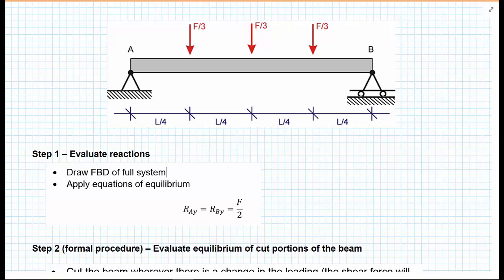In this second example on drawing shear force diagrams, we're going to extend slightly on what we did with the previous simply supported beam subject to one force. But now we have a scenario where we have a simply supported beam, pin support on the left at point A, and a roller support at point B on the right hand side. But we now have three point loads, all of value F upon 3, and they're L upon 4 in distance along the x-axis.